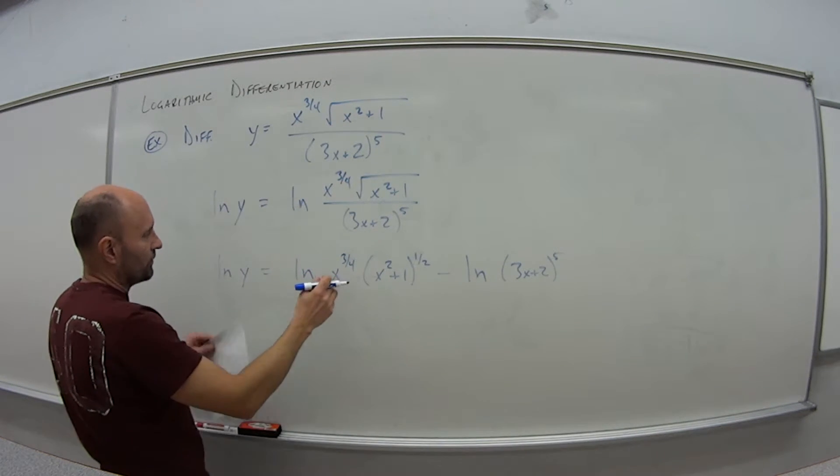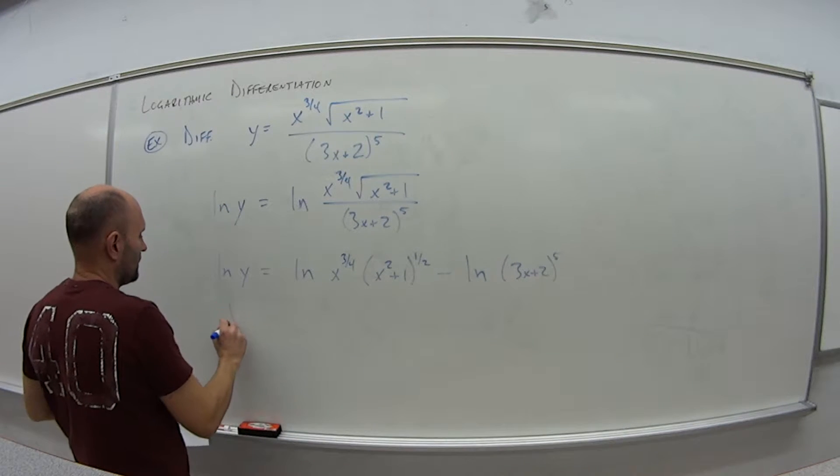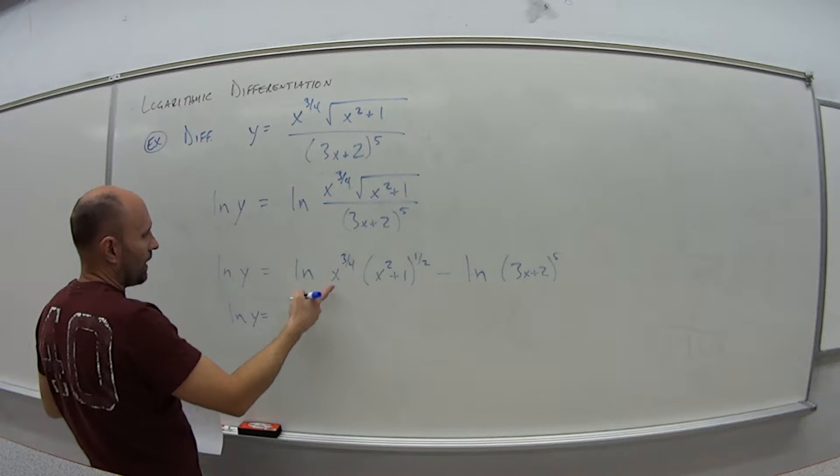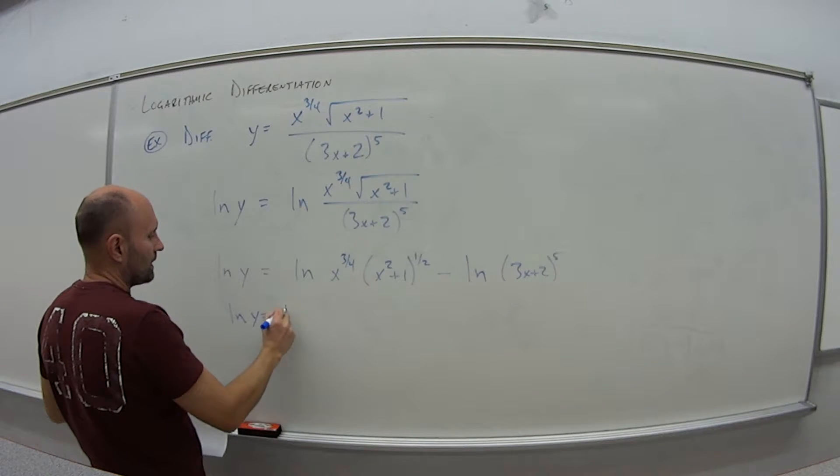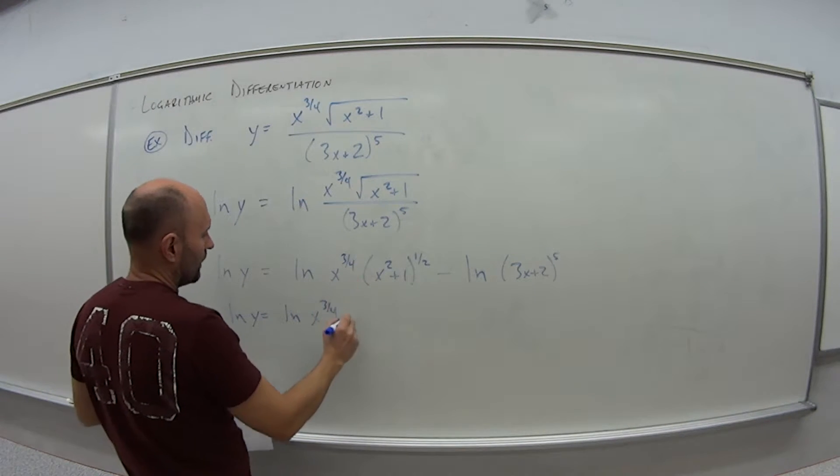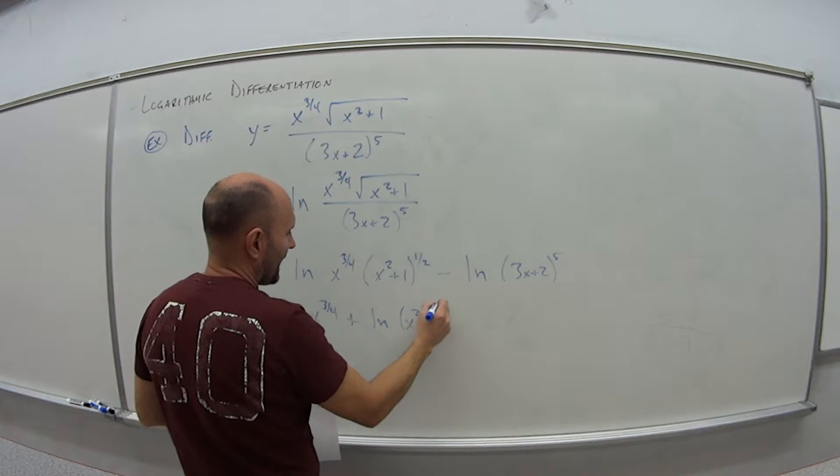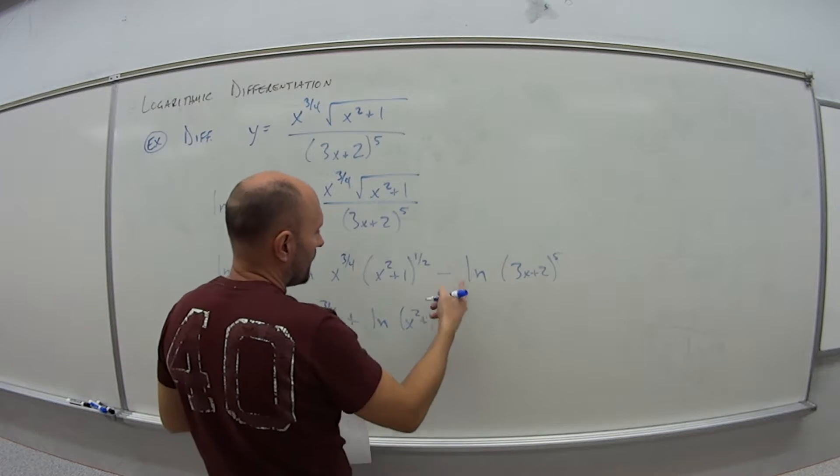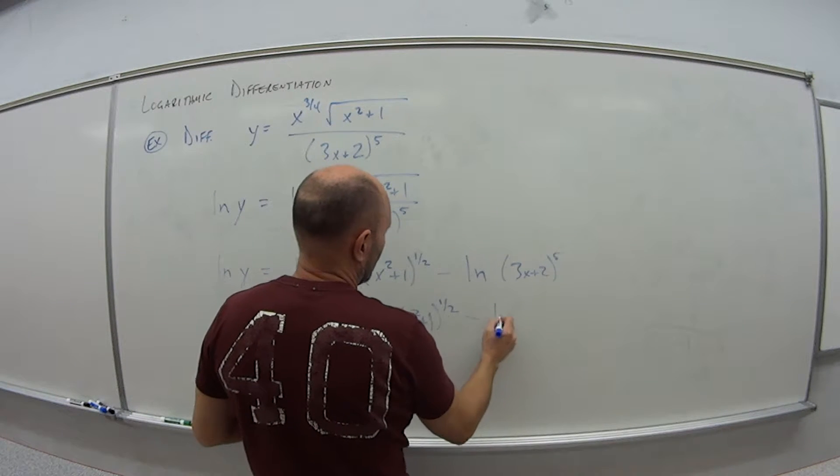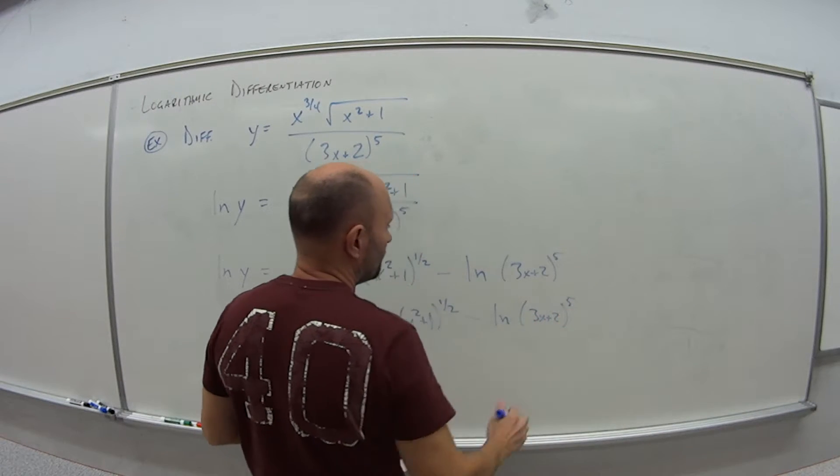So now break this up. This is natural log of the product of two functions. So that means natural log of y, so I can add these, right? Natural log of x to the 3/4 plus natural log of x squared plus 1 to the 1/2, minus natural log of 3x plus 2 to the fifth.